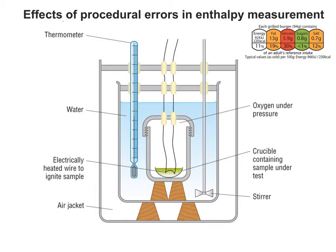For example, when you go and buy some food in the shops, it'll generally carry an energy content on its label. It'll have to do this by law, so that people who are counting the number of calories they're consuming can do this when they're shopping and check what they're buying and what they're going to cook.